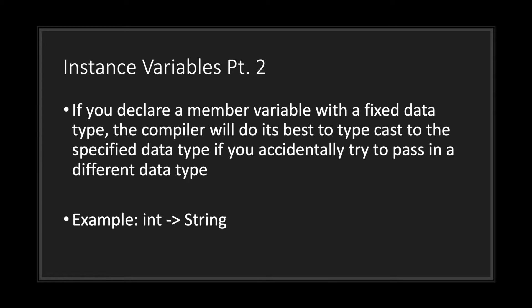If you declare a member variable with a fixed data type, the compiler will do its best to typecast to a specified data type if you accidentally try to pass in a different data type. So let's say your instance variable is declared with data type string, but during runtime you accidentally pass it an integer value. What the compiler will do is change your integer value into a string value, basically wrapping your integer value inside double quotations.